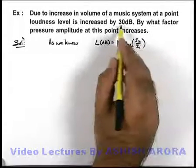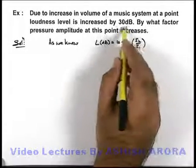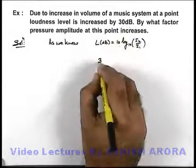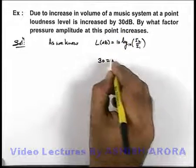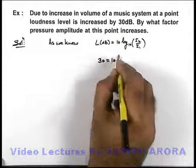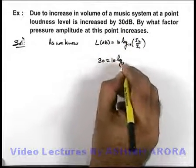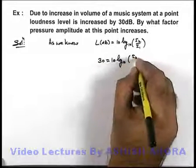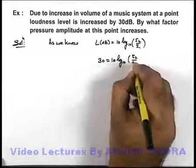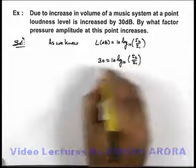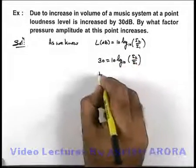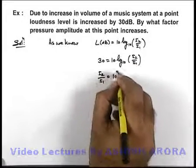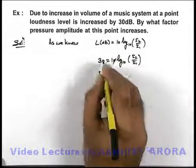We are given that sound loudness level is increasing by 30 dB, so we can write: 30 is equal to 10 log to the base 10 of I₂ by I₁.